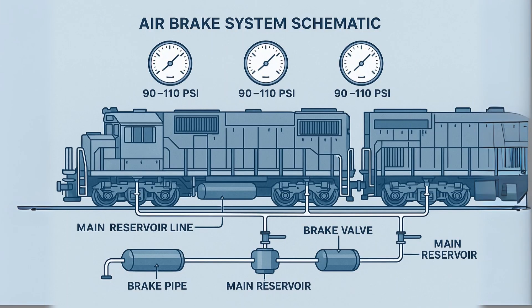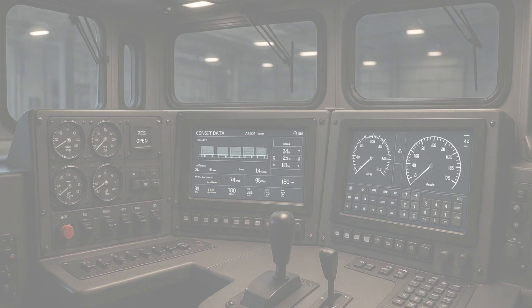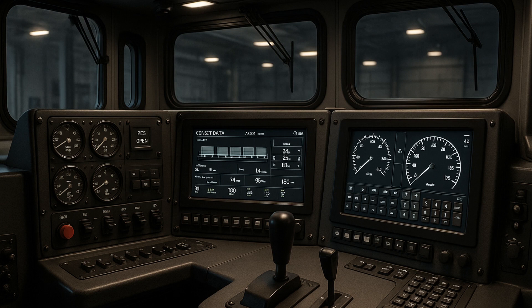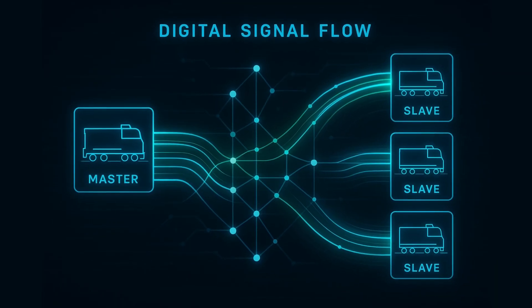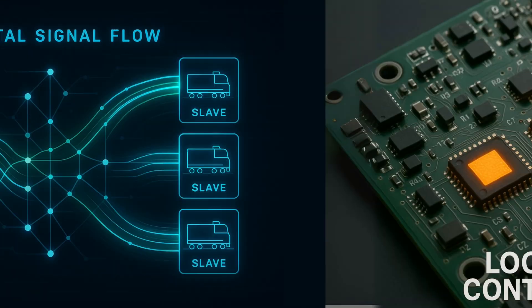Train lines also include communication cables for distributed power systems and GPS synchronization. The lead locomotive functions as the master unit, housing the primary engineer's control stand. Control signals are transmitted through the MU cable using standardized protocols, including throttle position commands, dynamic brake settings, and reverser position. The trailing units operate as slaves, receiving and executing commands from the master unit.